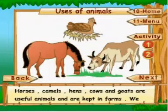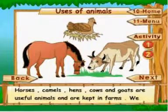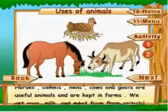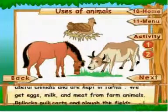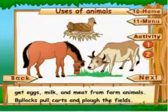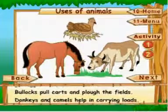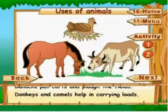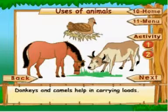Uses of animals. Horses, camels, hens, cows and goat are useful animals and are kept in farms. We get eggs, milk and meat from farm animals. Bullocks pull carts and plough the fields. Donkeys and camels help in carrying loads.